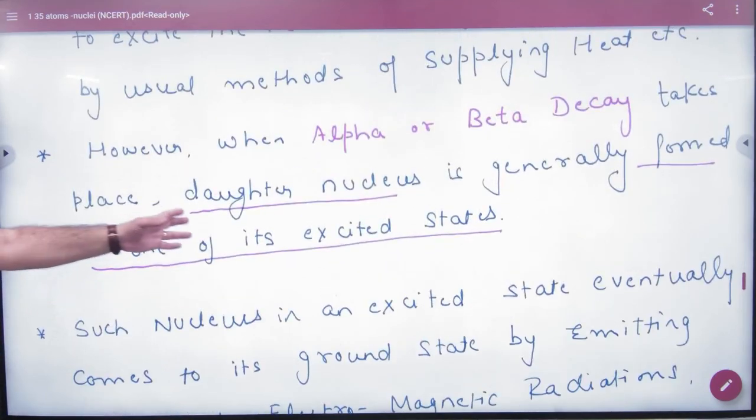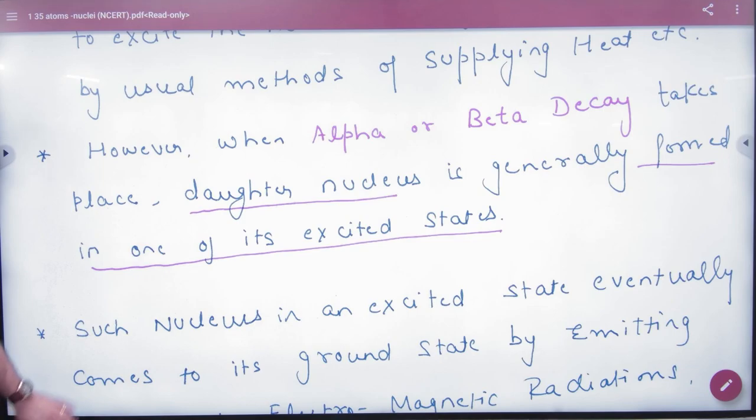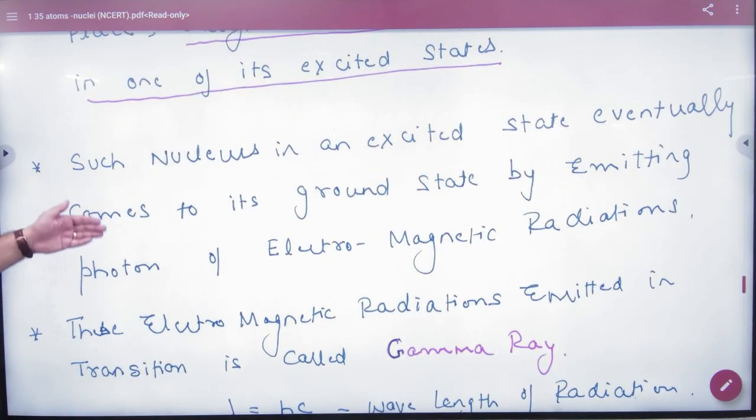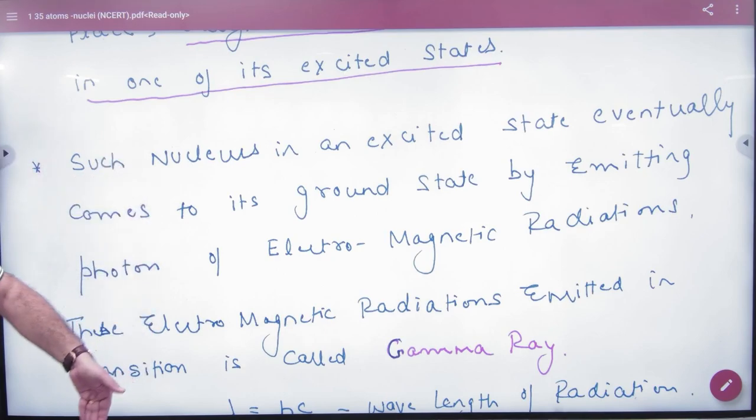The daughter nucleus is generally formed in one of the excited states. When a big nucleus breaks into smaller ones, they automatically start in a higher energy state. Such nucleons in an excited state eventually come to the ground state by emitting EM radiation.